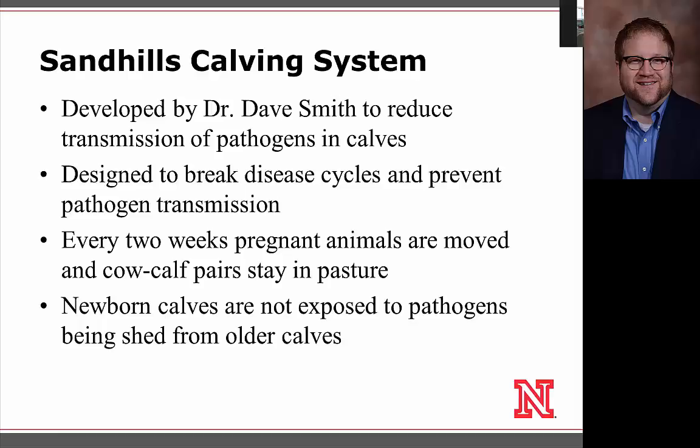All these pathogens show an age-dependent predilection, which informs a key management strategy: the Sandhills calving system, developed and tested in the Sandhills of Nebraska to break disease cycles. Since calves one to three weeks old are most susceptible and shed high levels of pathogens, pregnant animals are moved every two weeks away from cow-calf pairs. Calves are then born on a clean pasture, reducing the pathogens they're exposed to at birth. This goes a long way toward breaking disease cycles and reducing the impact of manure-borne pathogens on calves.